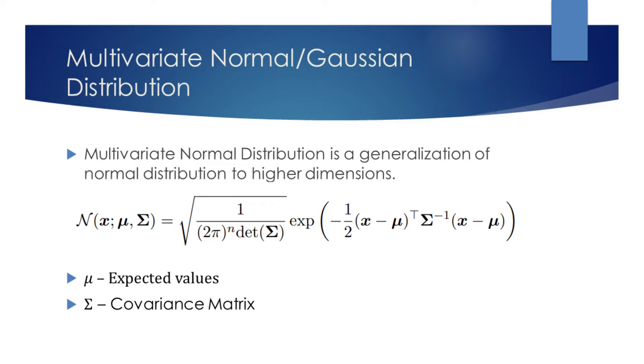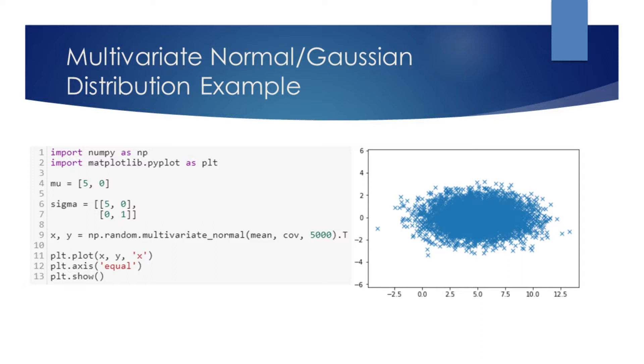To get a better sense of this concept, let's have a look at an example. On the fourth line of the code, we declare the vector mu containing the means, as discussed earlier.